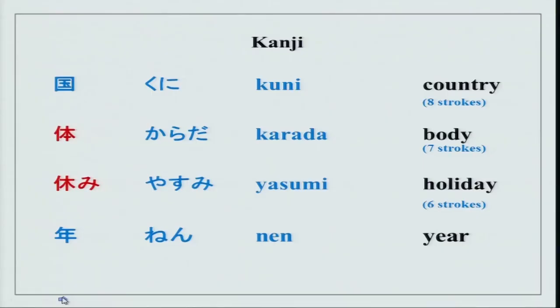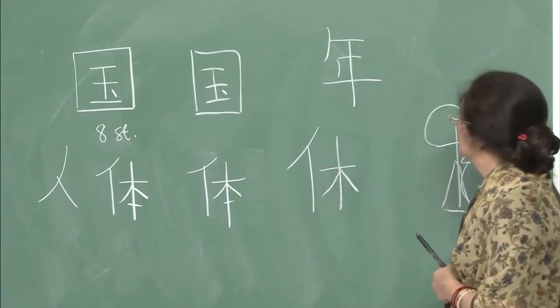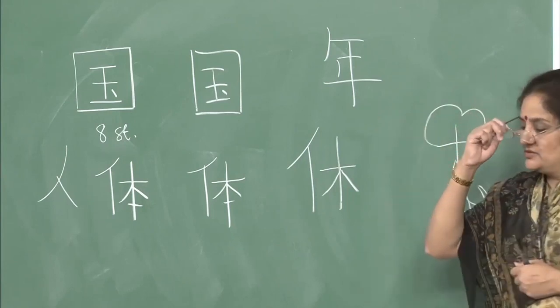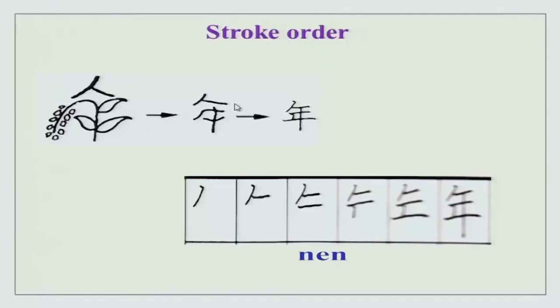The last one is nen, meaning year — 1, 2, 3, 4, 5, and 6 — a 6-stroke character. Why nen? Because as we were all an agrarian society earlier, once a year you sow your grain — it takes time to grow, to mature, and then next year you sow again. Thus it is associated with grain — ichi, ni, san, yon, go, roku. This is the correct stroke order — remember this order.